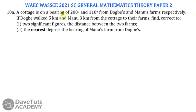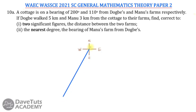We are told that the cottage is on a bearing of 200° from Dubois and 110° from Manu's farm. For the bearing of 200° from Dubois, we draw our cardinal point with north, south, east, and west. North to south is a straight line of 180°, so 200° will be just a bit past south — the inclination from the north to this direction is 200°.